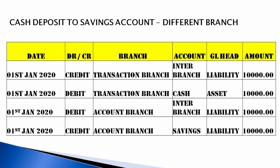For cash deposit to a savings bank account at a different branch, the liability (savings account) will be credited at the account branch. Cash deposit means you have to increase the cash balance, so cash (asset) is debited. If you want to increase, you debit. Then inter-branch accounts are used — one will be debited and another credited.